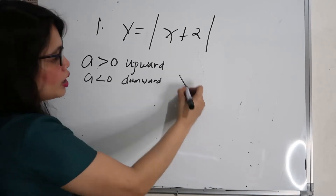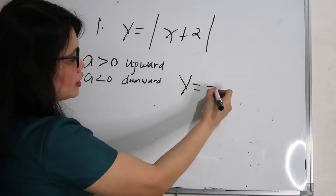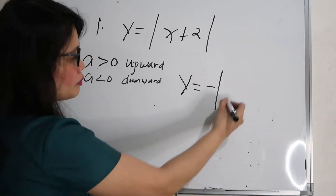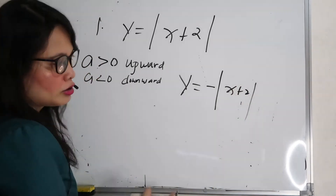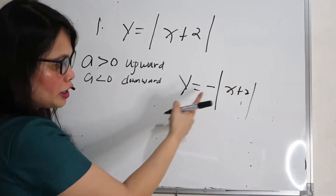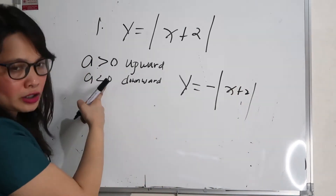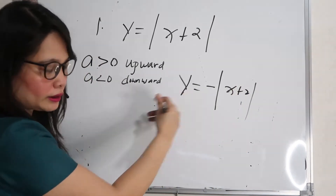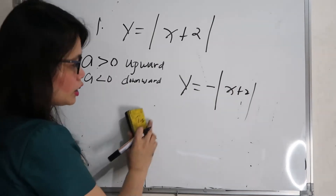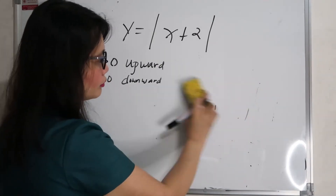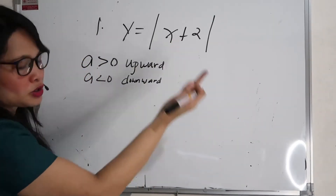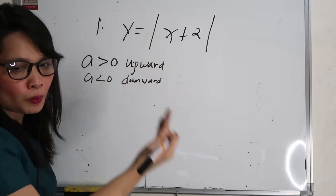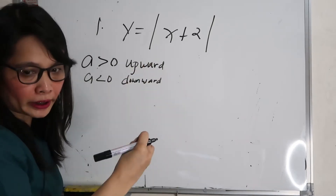What if the given is y equals negative absolute value of (x plus 2)? In that case, a is less than 0, so it opens downward. But in our example, y equals the absolute value of (x plus 2), so it's positive and opens upward.